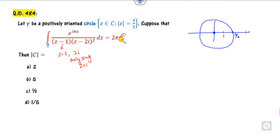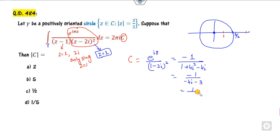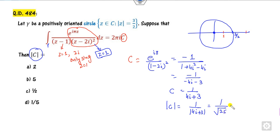The only singularity in this case is Z equals 1. C is the residue at the singularity point Z equals 1. Substituting: this is e raised to power pi times (1 minus ...), giving 1 over (1 plus 4i squared minus 4i), which is 1 over (4i plus 3). We need the modulus of C, which is 1 over the modulus of (4i plus 3), giving 1 over 5 as the right answer.